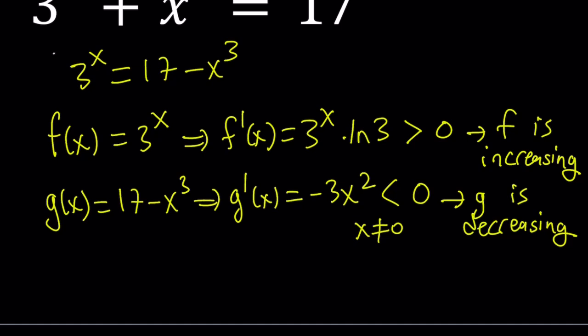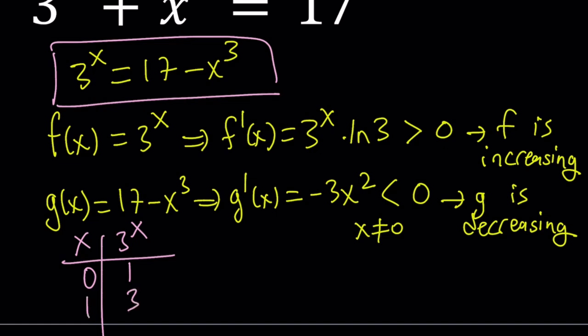Well, here's the thing. If you consider this equation and look at those two functions, we can make a table of values. For example, you can make x and 3 to the x. For x equals 0, this is 1. For x equals 1, this is 3. For 2, this is 9. For 3, this is 27.